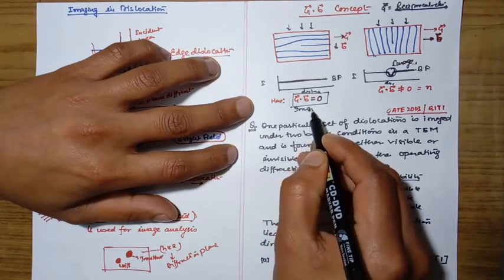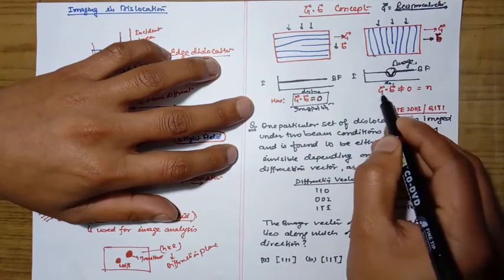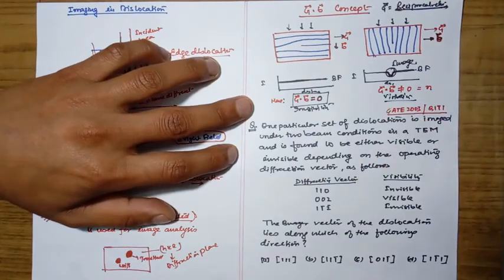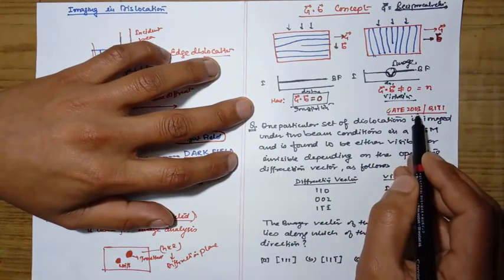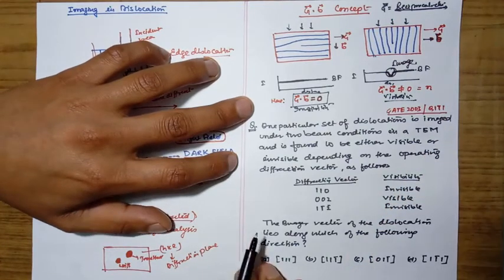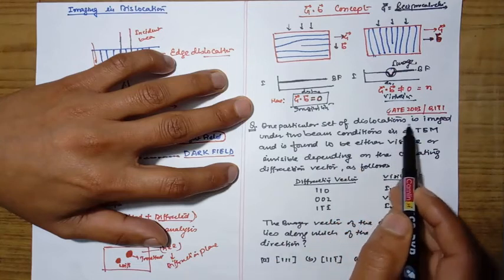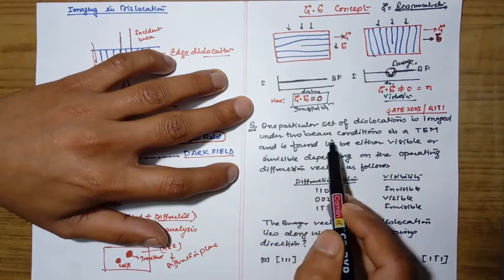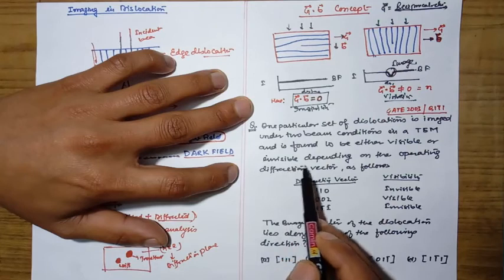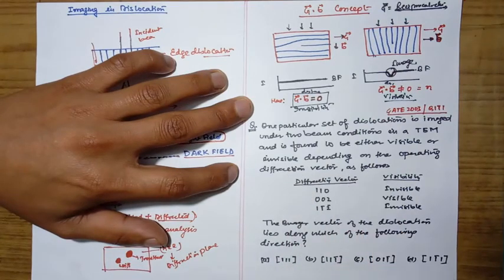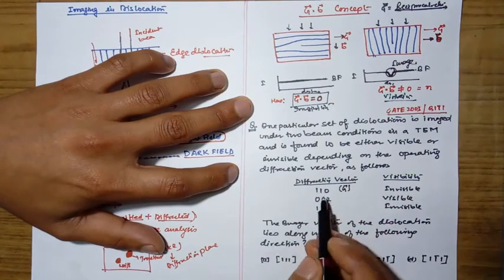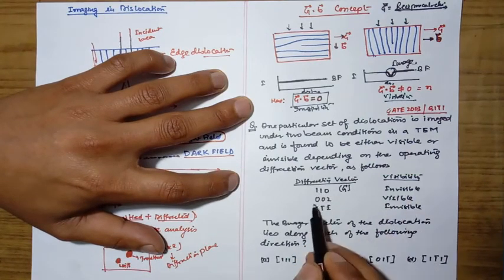Now we will solve a GATE 2003 problem from physical metallurgy (question 171 in the chapter-wise book). One particular set of dislocations is imaged under two-beam conditions in a TEM and is found to be either visible or invisible depending on the operating diffraction vector G as follows: G = [110] → invisible; G = [002] → visible; G = [1,1-bar,2-bar] → invisible. The question asks: along which direction does the Burgers vector of the dislocation lie?